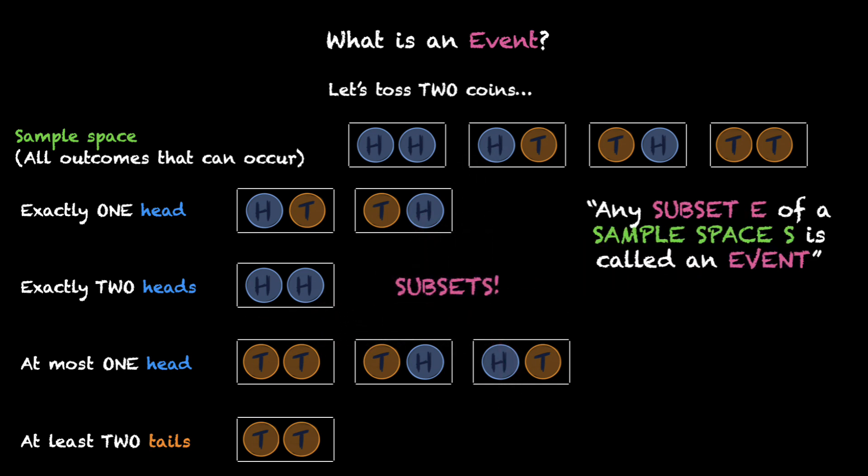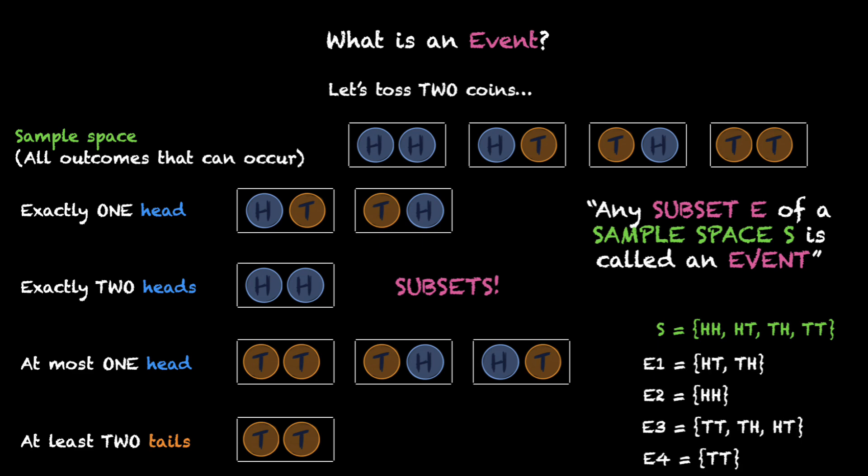So to define what an event is, we can say that any subset E of a sample space S is called an event. All four of these are called events and we can have many more of them. This is how you'll see them in your textbooks — written in set notation. You have the set S, which is the sample space with these four outcomes, and then you have these four events which are subsets of the sample space. Events are subsets of sample space.